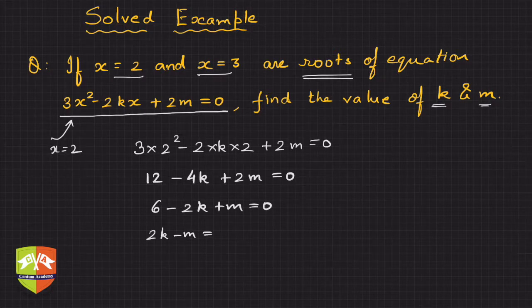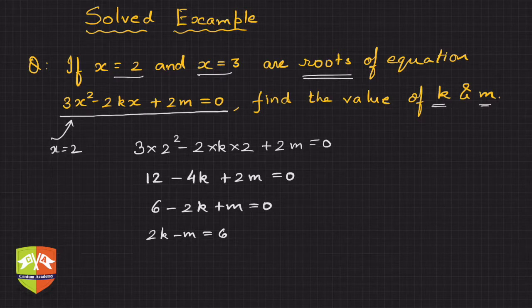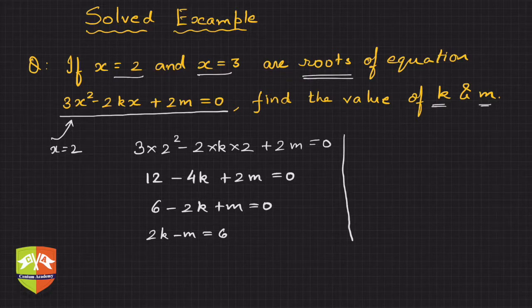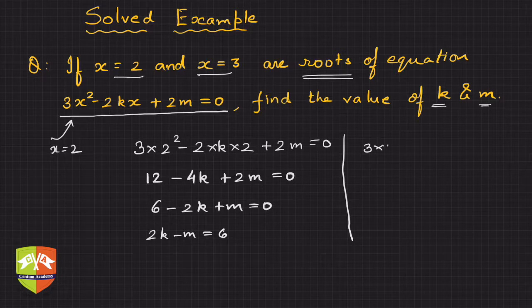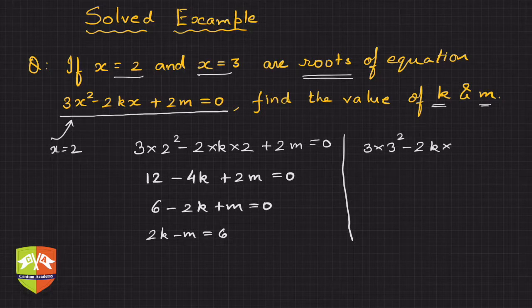Secondly, you can see x = 3 also is a solution, so instead of x you can write 3 as well. So 3 into 3², I'm plugging in x = 3 wherever there is x, you simply replace it by 3 and simplify.